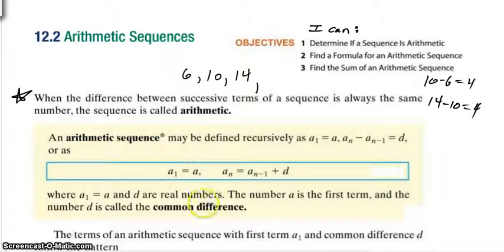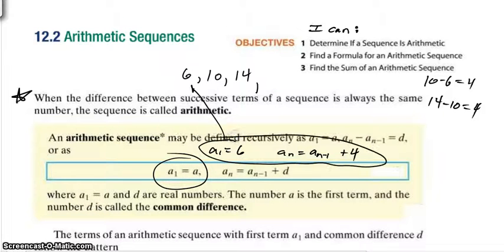So we can define this recursively by saying, remember, the recursive setup would say, let's begin with something. Call our first term some value. In this example, a sub 1 would have been 6. And then you'd say to find your nth term, go to your previous term and add that fixed number. If you look at the example that we started with, this right here would be a recursive defined sequence. Begin at 6, and then to find your nth term, go to your previous term and add 4. And again, d is known as the common difference.